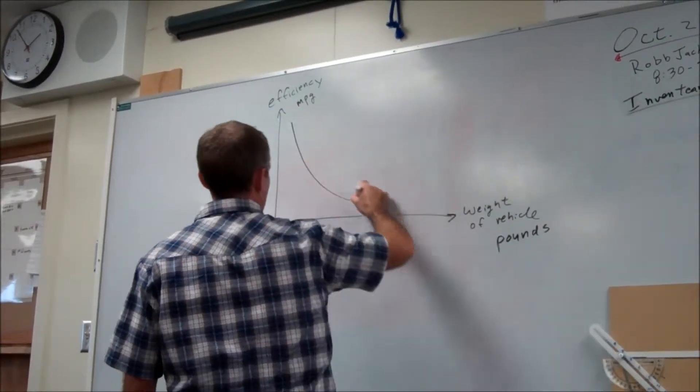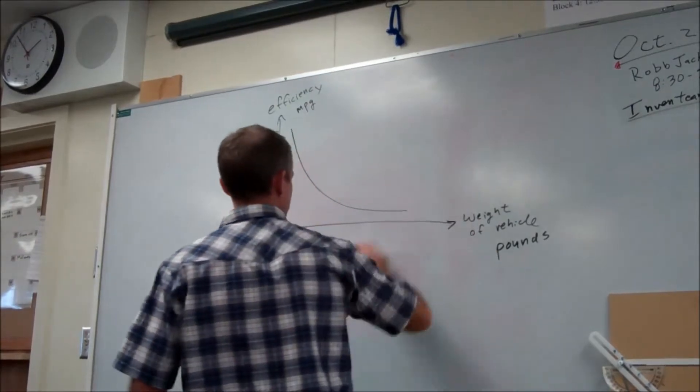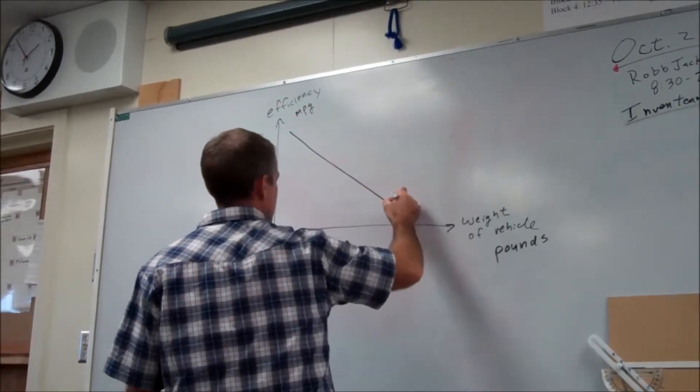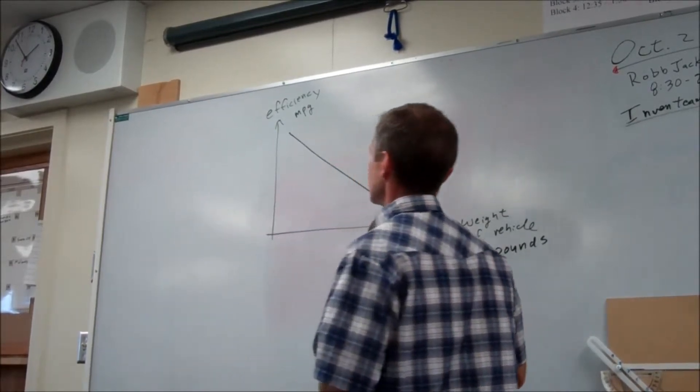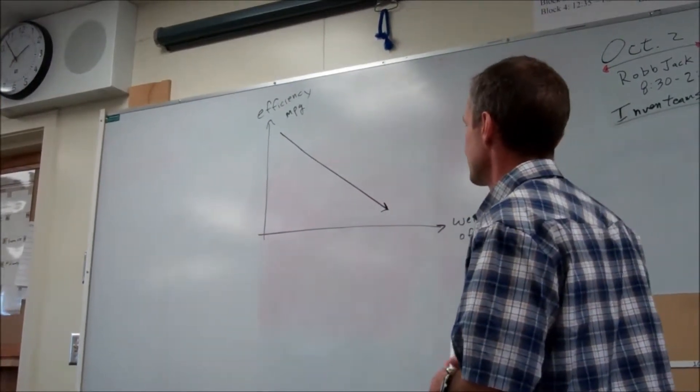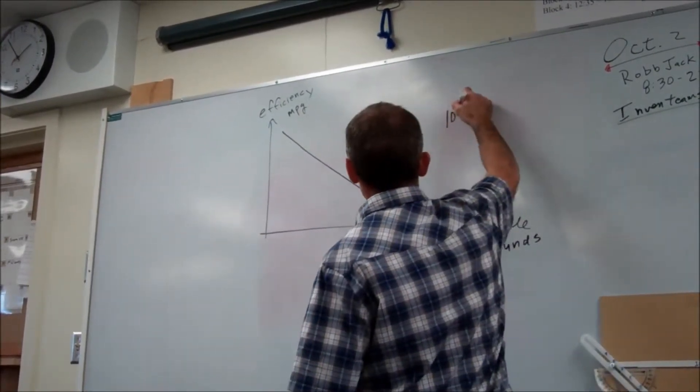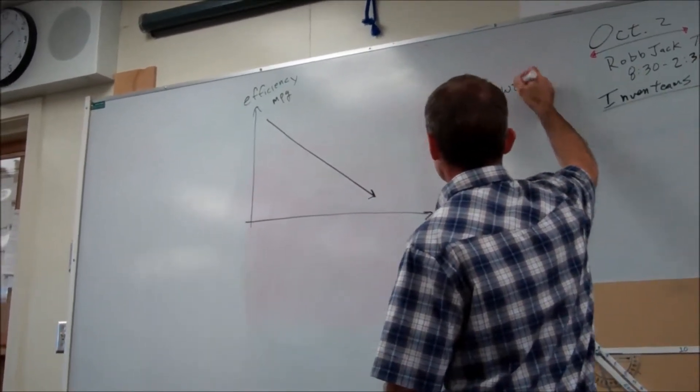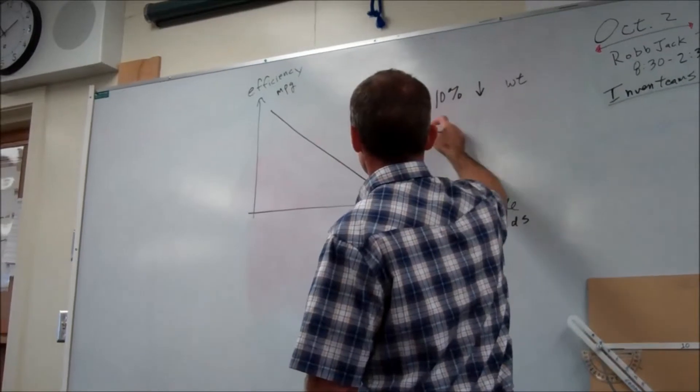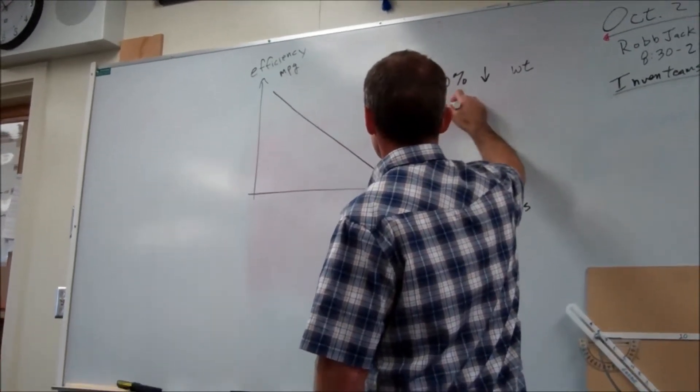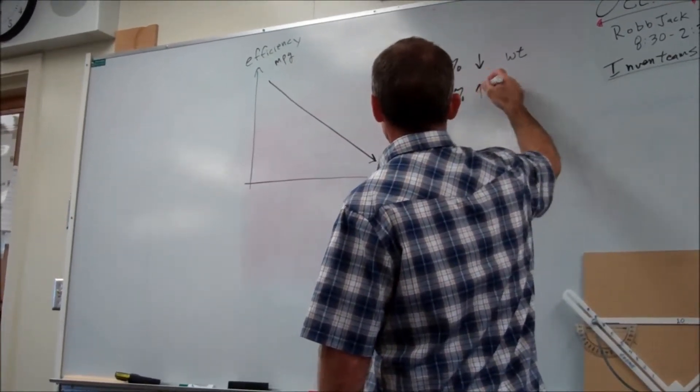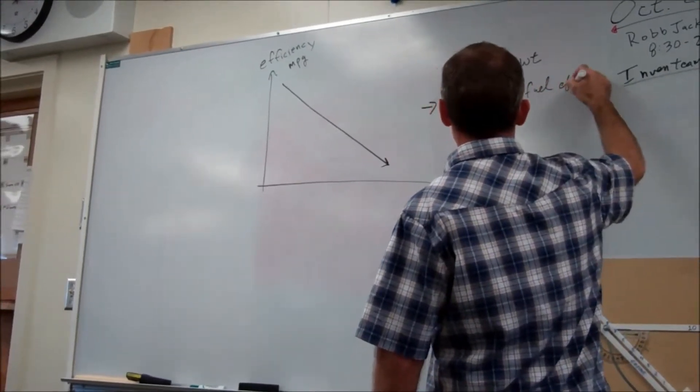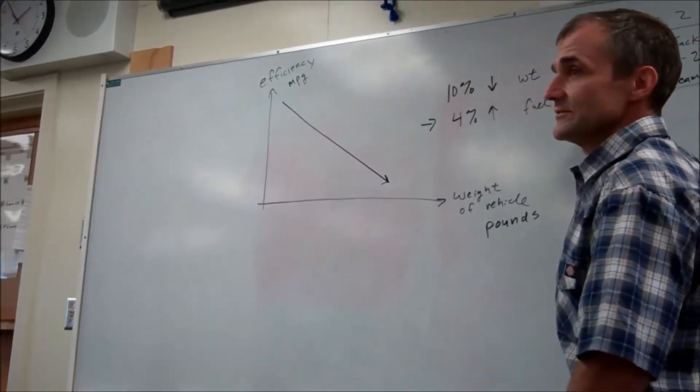Okay, is it a curve like that? No, it's a linear function. So it's a straight line coming down. How do you know it's linear? Because the article says that for every 10% reduction of weight results in a boost of 4% fuel efficiency. So 4% increase in fuel efficiency. Everybody there? Everybody thinks this is linear?